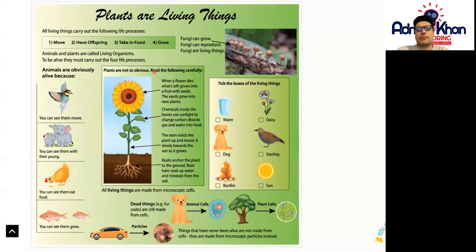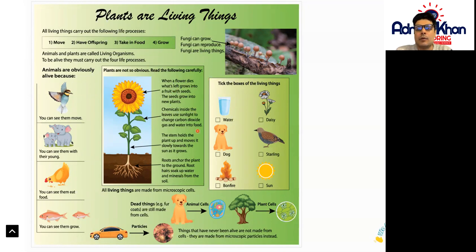Plants are not so obvious. When a flower dies, what's left grows into a fruit with seeds, and the seeds grow into new plants. Chemicals inside the leaves use sunlight to change carbon dioxide gas and water into food. The stem holds a plant upright and moves it slowly towards the sun as it grows. The roots anchor the plant to the ground, and root hairs soak up water and minerals from the soil.